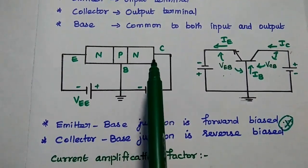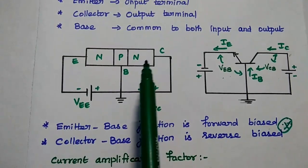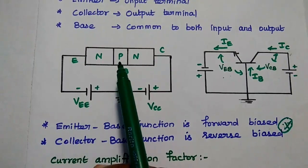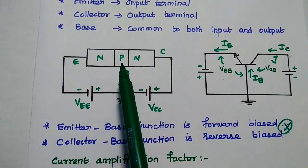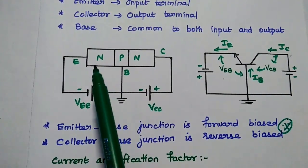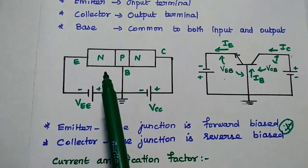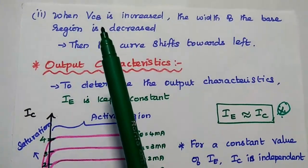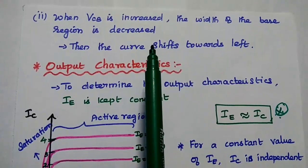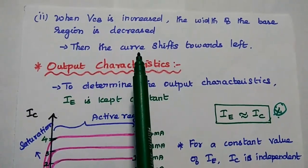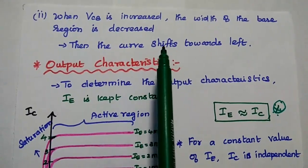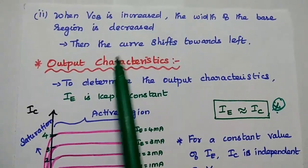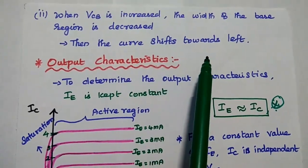Whenever VCB is increased, the base width gets decreased. If it is decreased, the emitter current flows more easily through the base. When VCB is increased, the width of the base region decreases, thereby increasing the emitter current with small values of input voltage, and the curve shifts towards the left side.